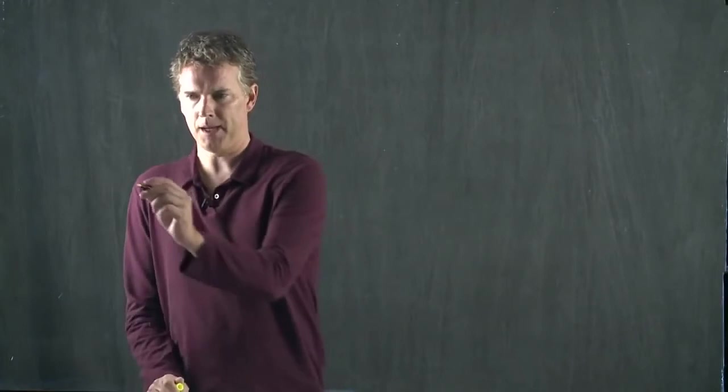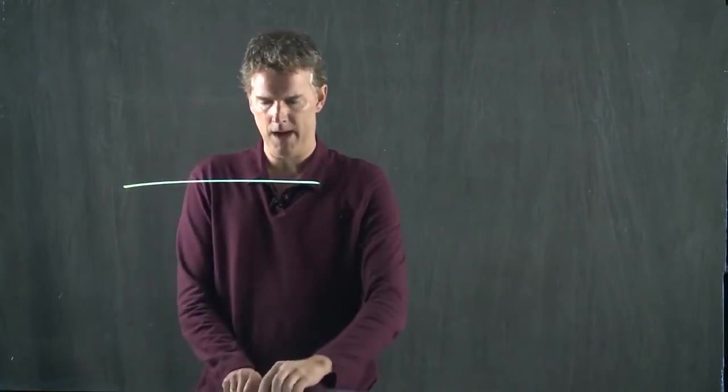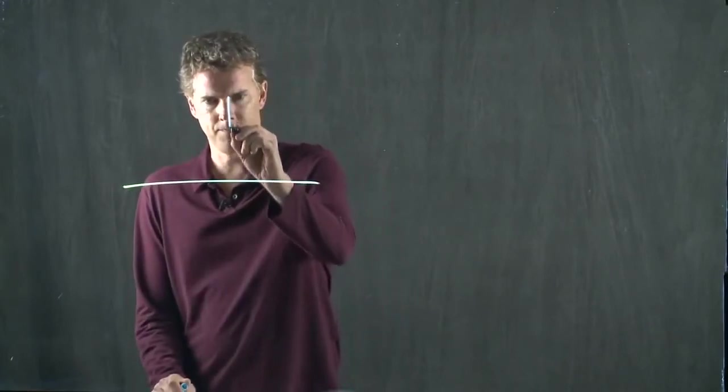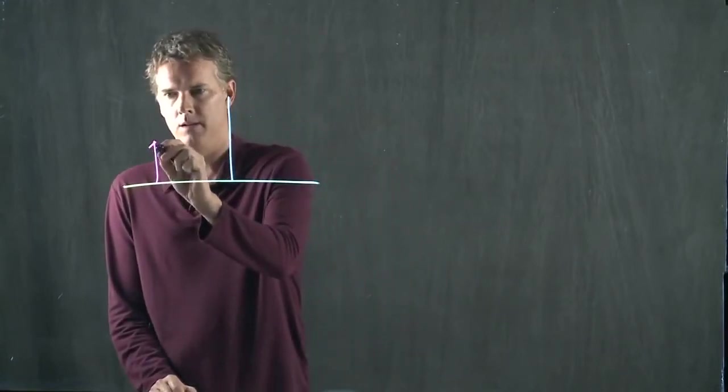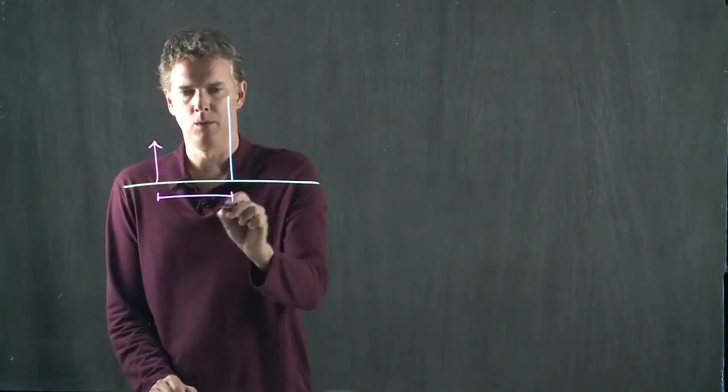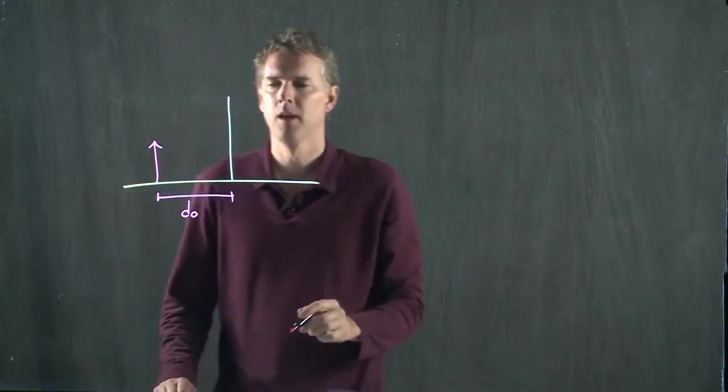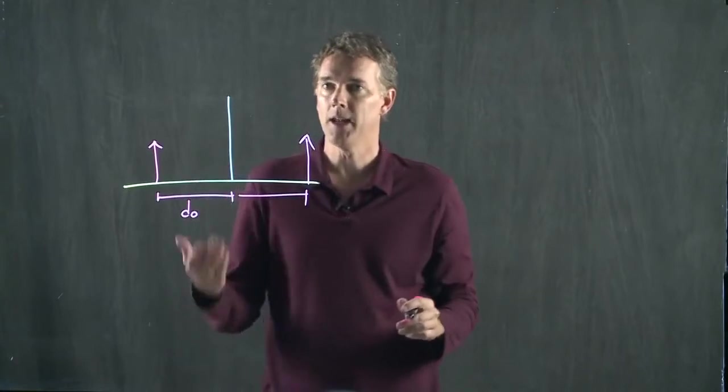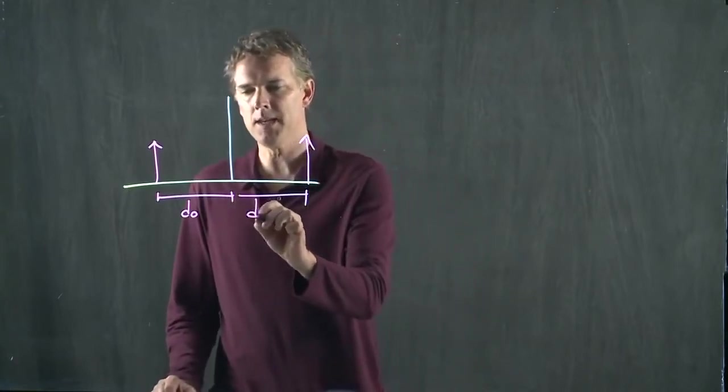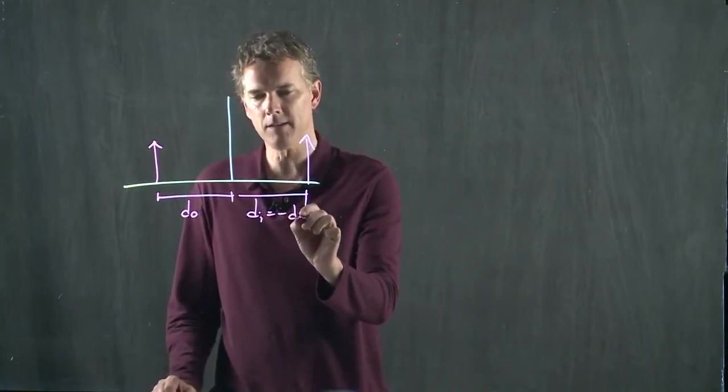If we have an optic axis here and we have a plain mirror, then we know that an object will have a length DO, but its image is on the right side. And it's to the right, and therefore DI is negative DO.